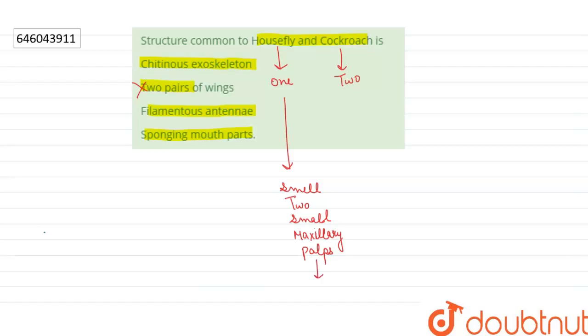In cockroach, the antennae have been extensively used for studying the multi-functional sensory appendage that generates gustatory, olfactory, tactile, and thermal senses. So option number three is also wrong.